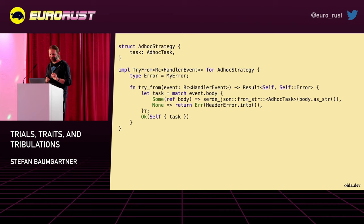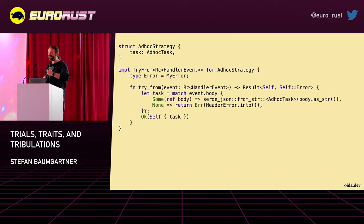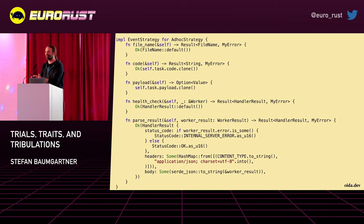Let's try to implement the ad hoc strategy. It takes a handler event, which is what I get in, and tries to create an ad hoc task out of it — a struct I already had. I care more about that I have a TryFrom trait where I can tell 'I tried to generate this struct for you, I tried to establish this strategy for you — it might fail, but if it doesn't fail I have a strategy I can work with.' So this is where I do all the parsing for code and for the payload. Then I have the implementation of the event strategy trait itself. And look at that — almost every method here is a one-liner except the one where I parse the result. But it got condensed so much that I can finally figure out what's happening there. And the same goes for the application strategy.